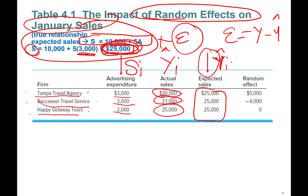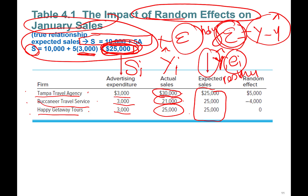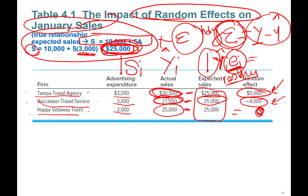We use little e_i for the estimated random error, which is called the residual. We can't know the truly random things that happen, but the residual is the estimated stochastic error term. For Tampa: actual sales thirty thousand minus expected twenty-five thousand equals a random effect of plus five thousand. For Buccaneer: actual twenty-one thousand minus twenty-five thousand equals negative four thousand. For Happy Getaway: twenty-five minus twenty-five equals zero — the model predicted perfectly.